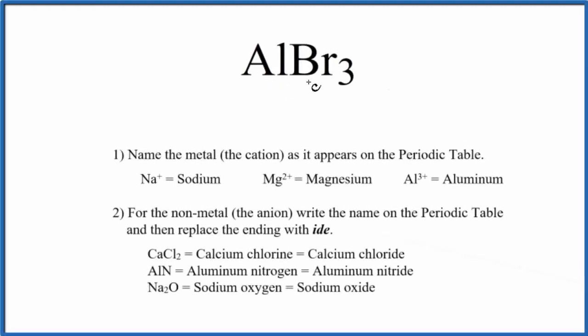To write the name for AlBr3, we first need to realize that this is an ionic compound. It has a lot of covalent character to it, but we're going to consider this an ionic compound because we have a metal and a non-metal.